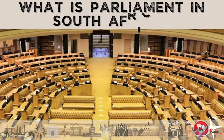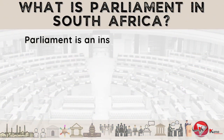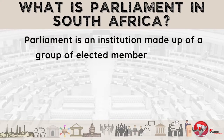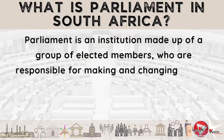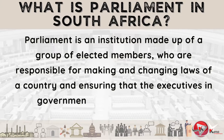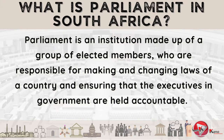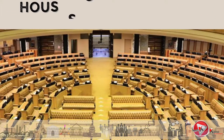Let us define what Parliament is. Parliament is an institution made up of a group of elected members who are responsible for making and changing laws of a country, as well as ensuring that the executives in government are held accountable, in the South African context.